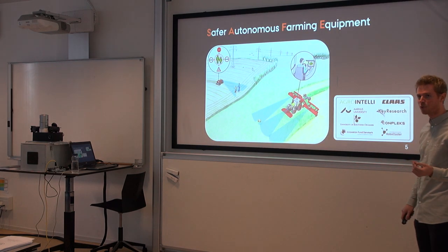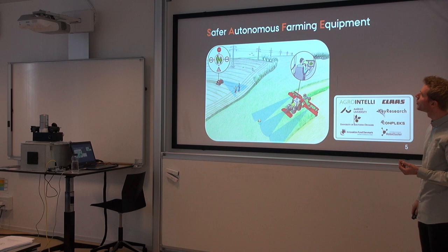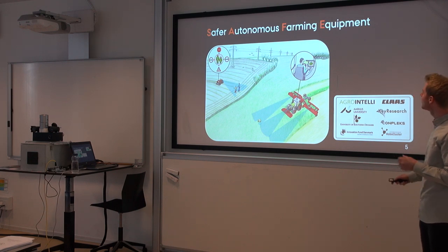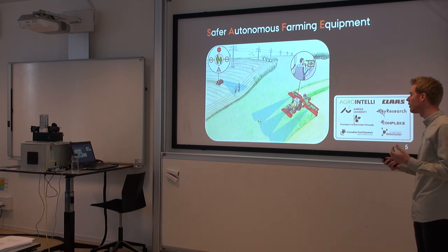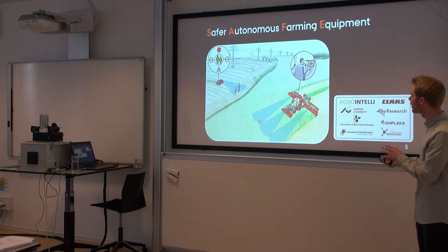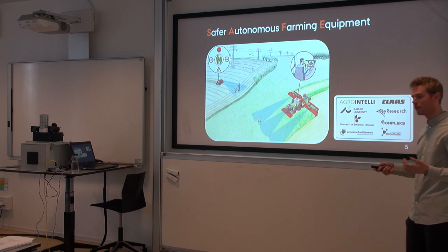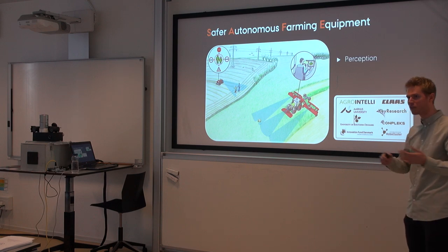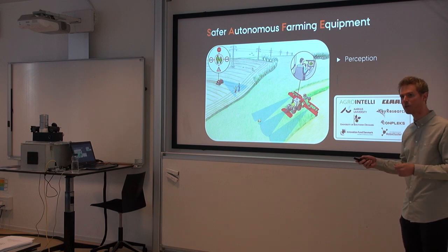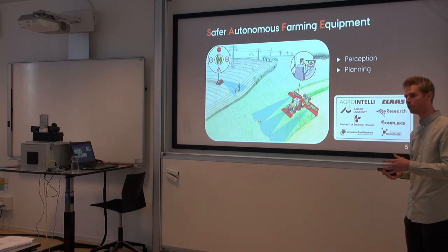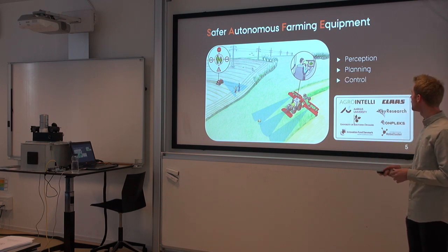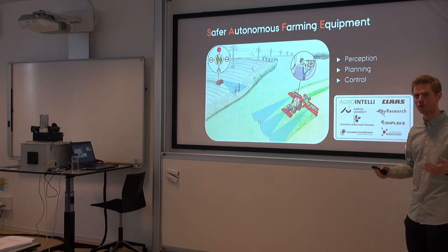My PhD project has been part of a project called SAFE, which is an abbreviation for Safer Autonomous Farming Equipment, concerned with making safe self-driving farming vehicles. That could be traditional tractors or smaller robots. In both cases, the vehicles need to perceive the environment, detect obstacles and recognize them, then plan what to do — should we stop the vehicle, move around the obstacle — and finally control it.